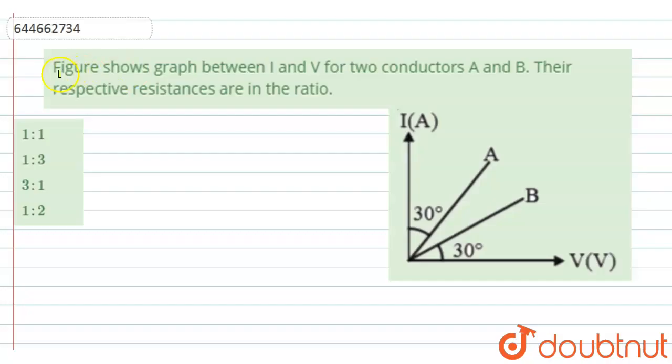The given question is: a figure shows the graph between current and voltage for two conductors A and B. Their respective resistance are in the ratio.